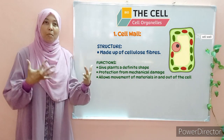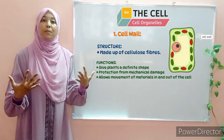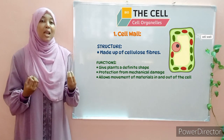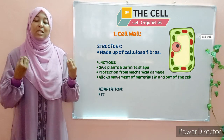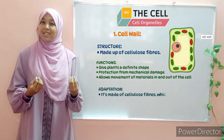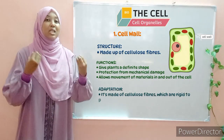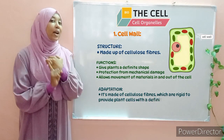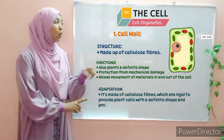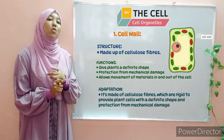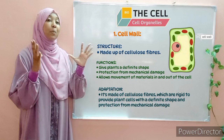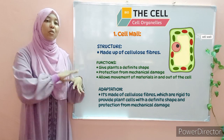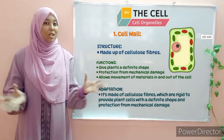Now, how do we form an adaptation? A plant cell wall is made up of cellulose fibers, which are rigid. And because they are rigid: number one, they provide a plant cell with its definite shape; and number two, they protect the inner parts of the plant from mechanical damage.